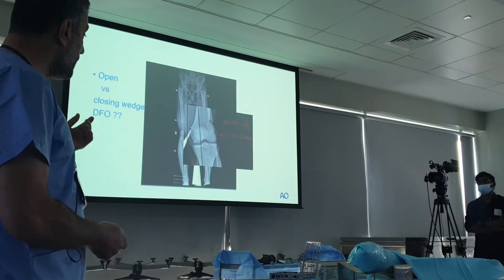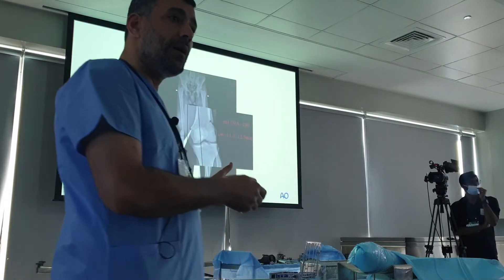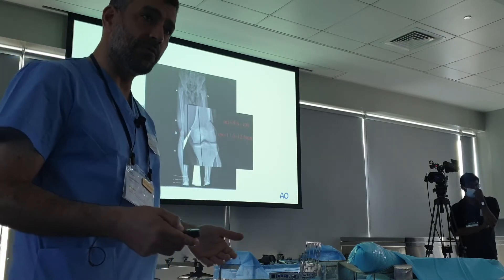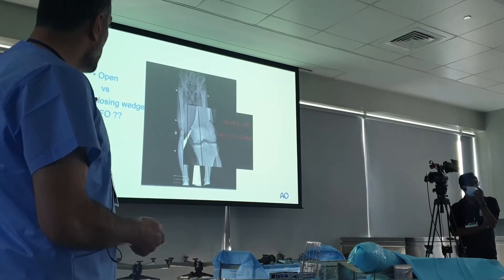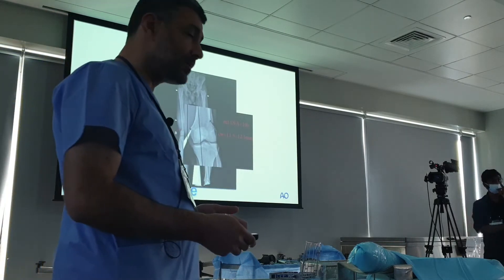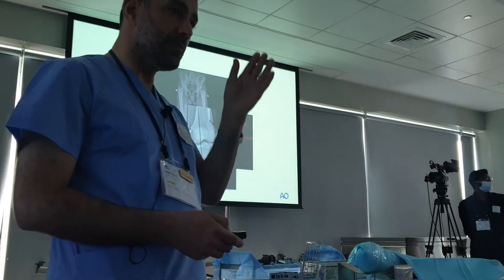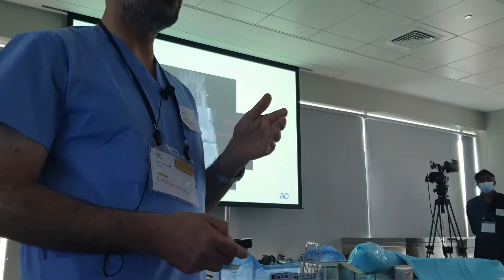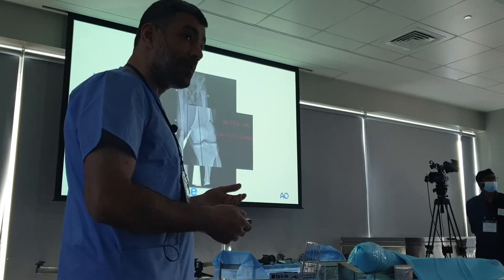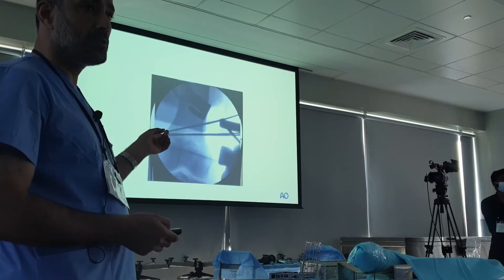The third question is: closing or open wedge osteotomy? The same principles apply in treating the arthritic knee. We should look at the limb length after simulation of correction. If it is okay, we proceed with closing wedge, which will provide better healing and more stability. If not, we go for open wedge. In this case, we proceed with closing wedge osteotomy.